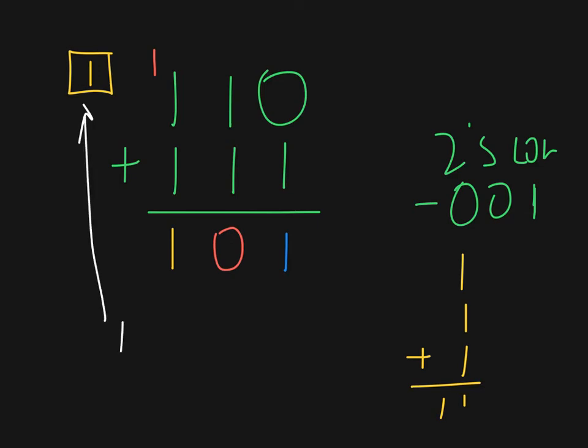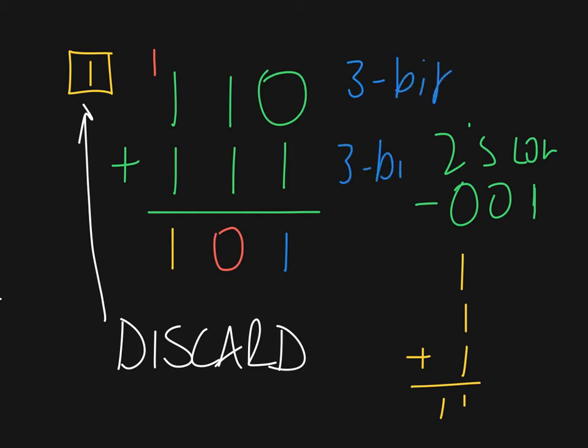In 2's complement, you just discard any extra, any overflow of this. So we, interestingly enough, are still stuck with this notion of 3 digits, 3 bits. So this remains 3 digits, 3 bits.